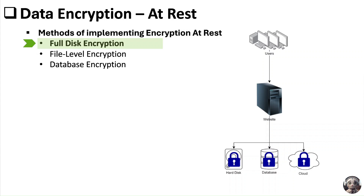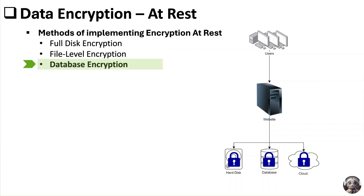First is full disk encryption. In this case, we encrypt the entire storage device, such as hard drives or SSDs, making all data inaccessible without the correct decryption key. Next is file level encryption, where we encrypt individual files or folders rather than the entire disk — this method is more granular and allows selective access control. Lastly, we have database encryption, where we encrypt data within databases, ensuring that sensitive information such as personal details or financial records is protected.